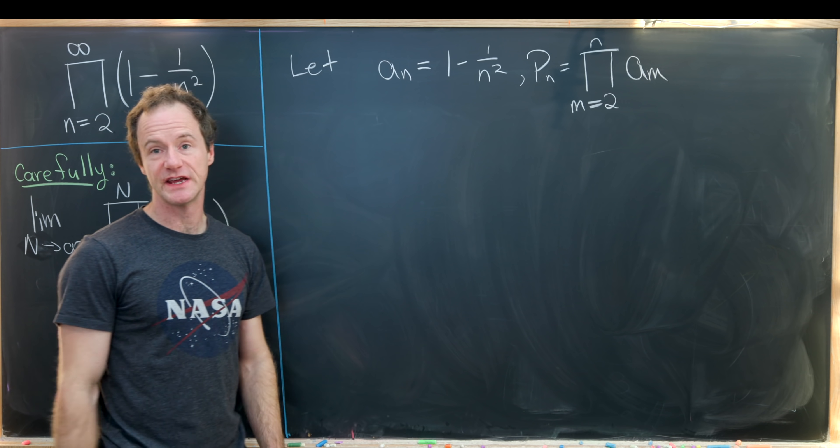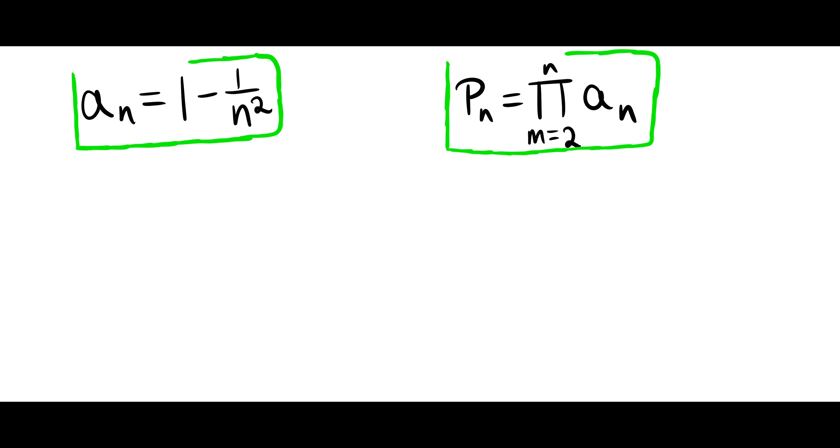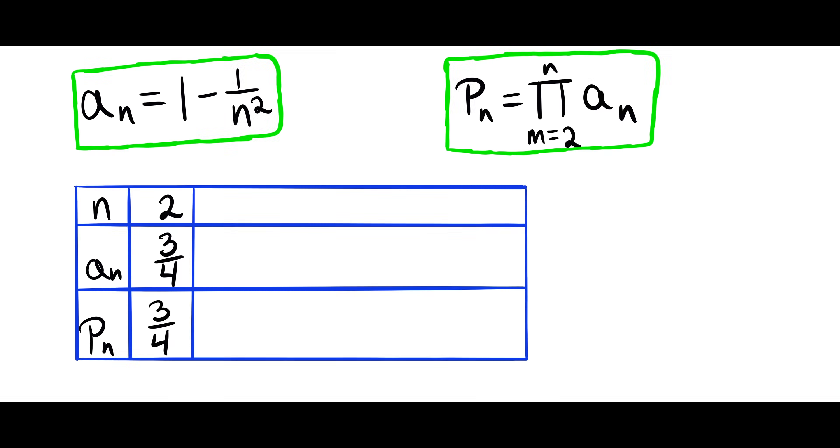And using this notation, we can quickly build our chart. So let's notice when n is equal to 2, a sub n is 3 quarters and p sub n is 3 quarters. When n is equal to 3, a sub n is 8 over 9 and p sub n is 2 over 3. When n is 4, we have 15 over 16 and 5 over 8.